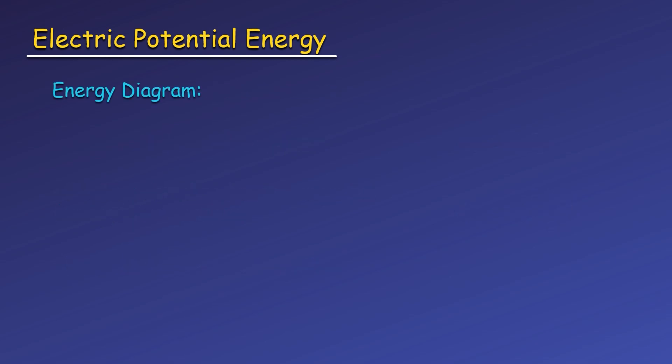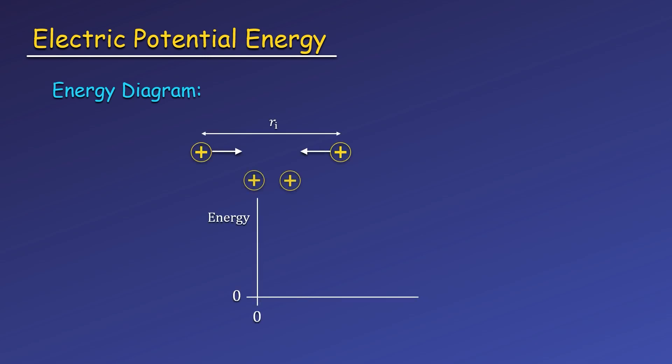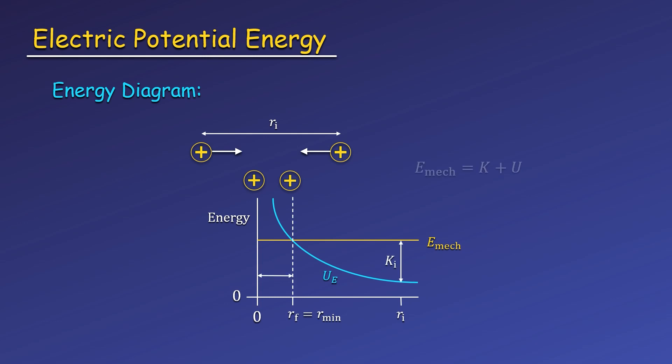Now let's look at energy diagrams since they are such a useful tool for solving problems. First, we'll look at the case where two positive charges approach each other. We know the charges will repel more and more, slowing down as they get closer, and eventually they will stop, turn around, and move in the other direction. The energy diagram can tell us where this occurs. For convenience, we'll say the charge on the left is going to stop at the origin. The two charges have mostly kinetic energy and little potential energy when they are far away, and their total mechanical energy is constant. As the charges get closer, their kinetic energy is transformed into potential energy until all of their energy is potential. The position where this occurs will be the minimum distance apart they reach.